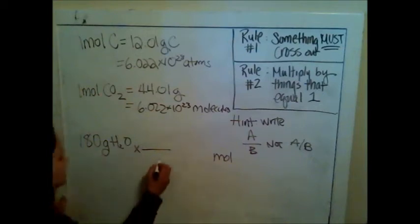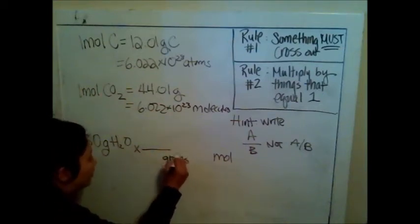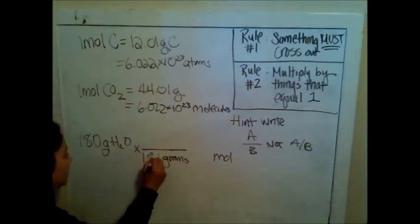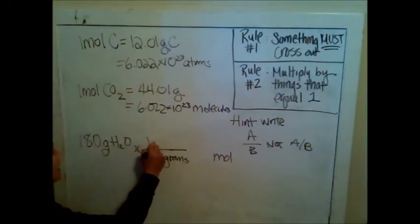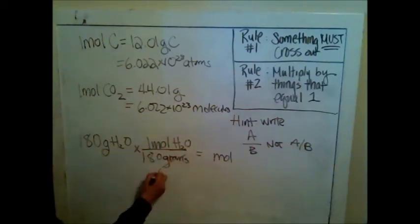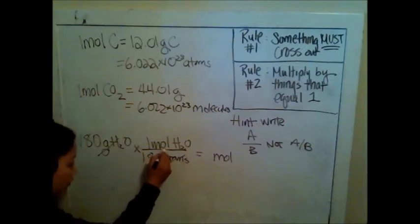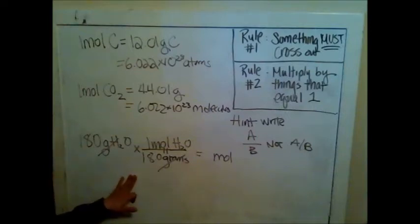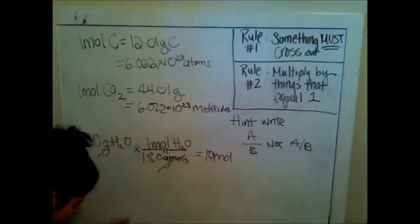I want to be in moles, so it must be the word gram that crosses out. Hopefully by now we're pretty firm on molar mass. This would be 18.0 grams of water is 1 mole of water. I would already be grams and grams cross out. 1 mole of water equals 18.0 grams. In this particular problem, I would already be done. I would take 180 divided by 18, and I would get, oh, I have 10 moles of water.